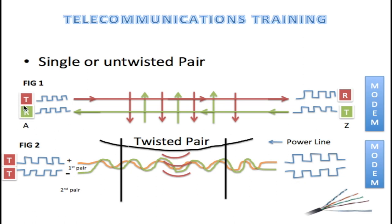Here we have data being transmitted from one end to the other — from A to Z — and being transmitted back from Z to A. This is a typical transmitter-receiver setup. In order for data to be transmitted from A to Z, there has to be a transmitter, a receiver, and data has to be transmitted back as well.